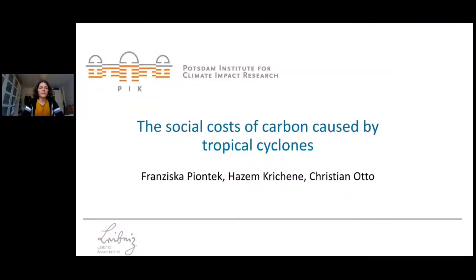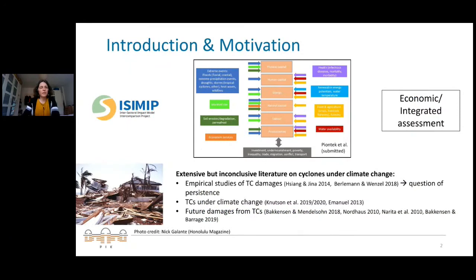I'm going to present work done in collaboration with my colleagues Hasen Christian and Christian Otto at the Potsdam Institute on the impacts of tropical cyclones. This is part of a larger project trying to quantify individual impact channels of biophysical impacts into the economic system, trying to improve the economic assessment of damages. We are building on output from the ISIMIP project — the Intersectoral Impact Model Intercomparison Project — which consistently quantifies impacts across many sectors.